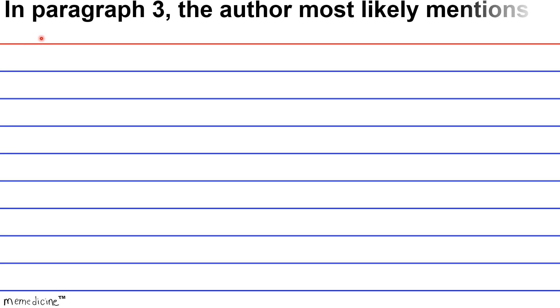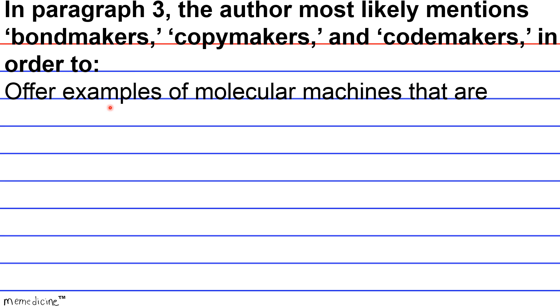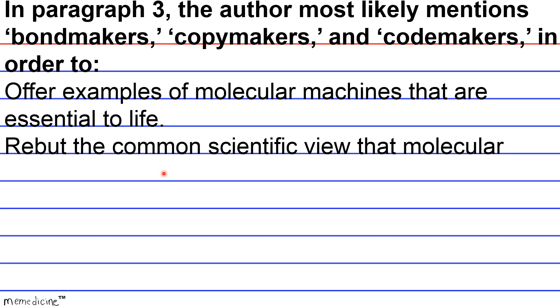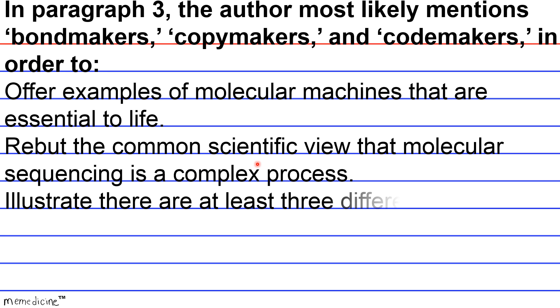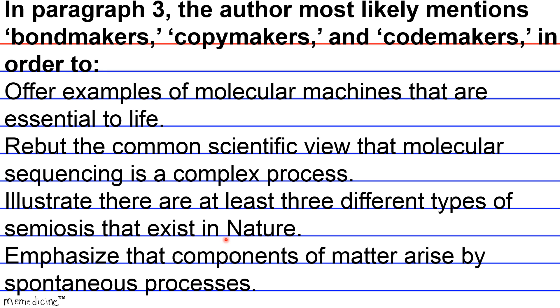So in paragraph 3, the author most likely mentions bondmakers, copymakers, and codemakers in order to, A, offer examples of molecular machines that are essential to life, B, rebut the common scientific view that molecular sequencing is a complex process, C, illustrate that there are at least three different types of semiosis in nature, or D, emphasize that components of matter arise by spontaneous processes. So press pause if you need to, and I'll give you a moment to think.